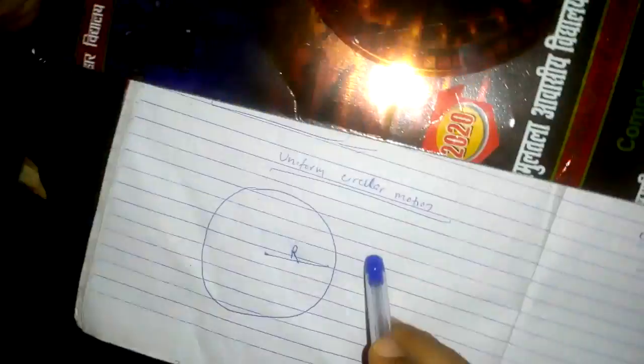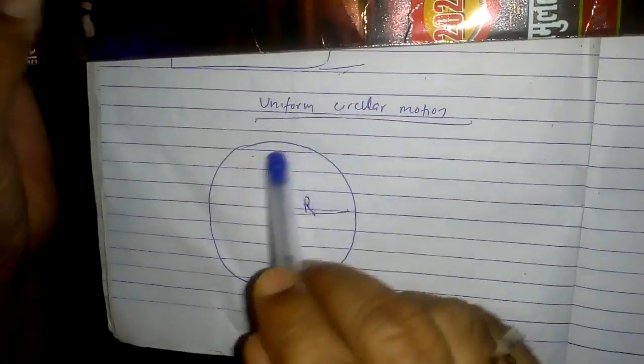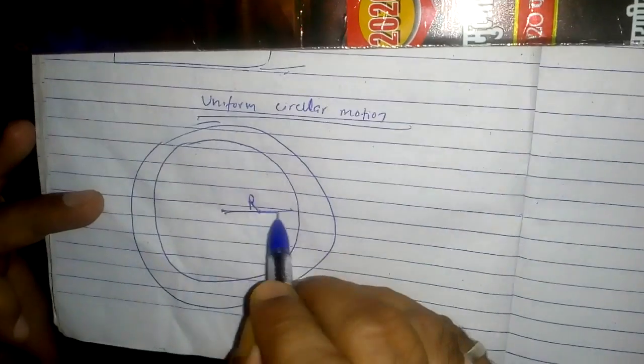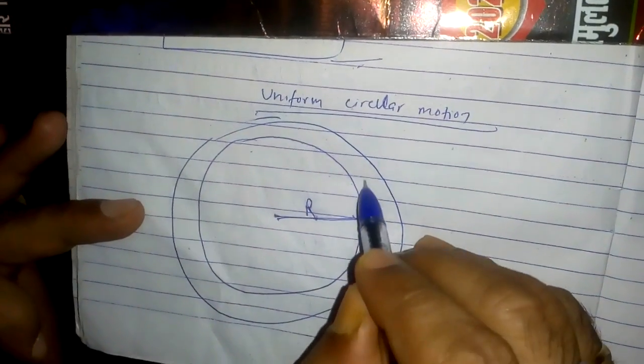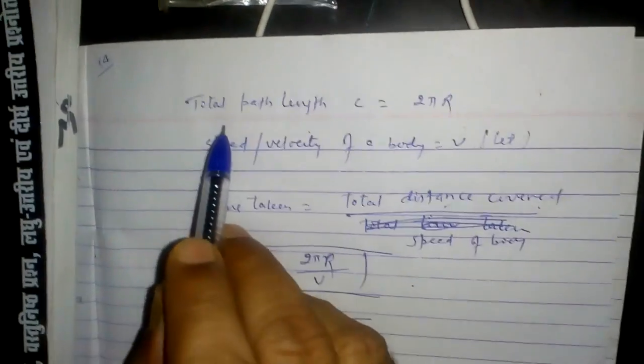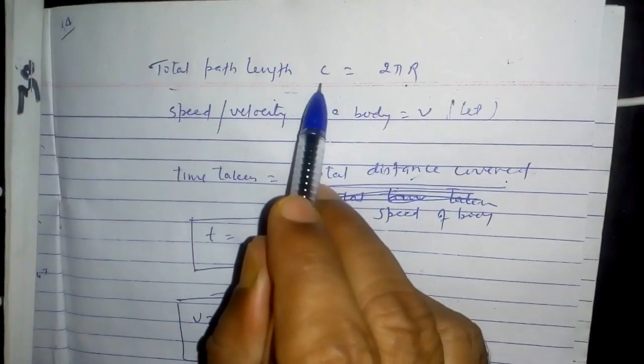Suppose that a body is moving on a circular path with radius r and velocity v. The total path length of this body is called C, which is equal to 2πr. This is our Uniform Circular Motion, and this path is called the Uniform Circular Path, where r is the radius and v is the velocity. So total path length C = 2πr, which is equal to the circumference of the circle.